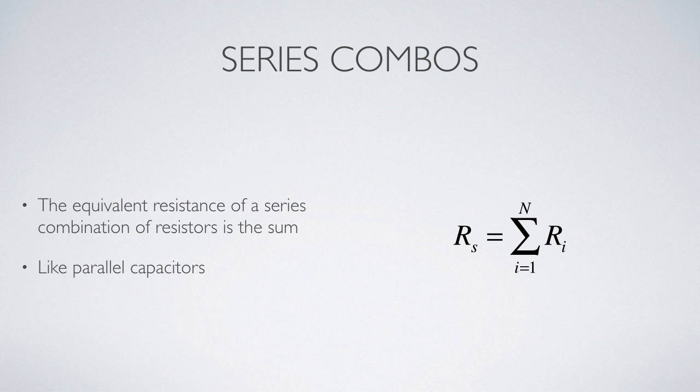In capacitors, it was the parallel combination where the capacitance added up. This is because of the difference between the way current flows in a resistor and doesn't flow in a capacitor.